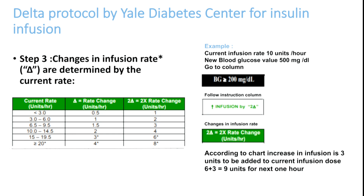For a simpler approach, just remember: the insulin rate in units per hour equals the blood sugar divided by 100. For example, 600 divided by 100 equals 6 units per hour. You can use this formula or follow the Yale Delta Protocol. To summarize insulin therapy in DKA: never start insulin as the first-line agent. First-line is fluid resuscitation, second is potassium correction, and third is insulin infusion. Thank you.